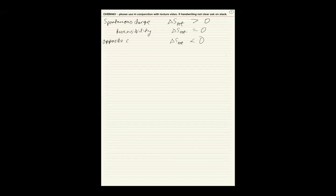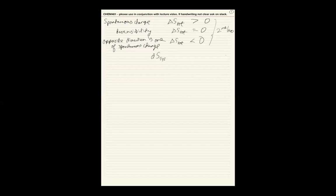When ΔS_total < 0, the opposite direction is the one of spontaneous change. This was our second law. Equivalently, we had the Clausius statement. I'll try to write whether it's dS_system or dS_total — please ask if it's not clear. The Clausius inequality gives the condition for spontaneous change with no equality; if you put equal, that's reversible.